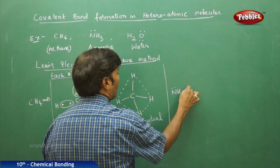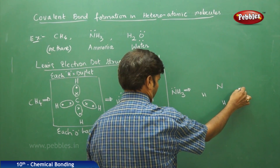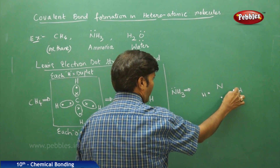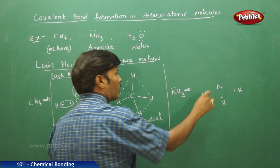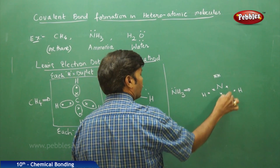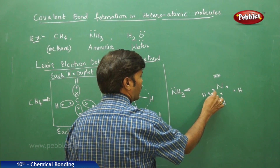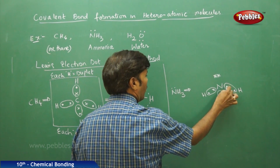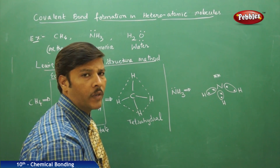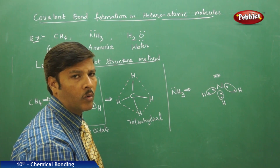For ammonia, nitrogen is the central atom. Applying the Lewis electron dot structure method: each hydrogen has one valence electron, and each nitrogen has five valence electrons. Three hydrogens share their valence electrons with three valence electrons of nitrogen, resulting in three bond pairs. Two of nitrogen's five valence electrons are not involved in bond formation, so they form a non-bonding pair — called a lone pair.